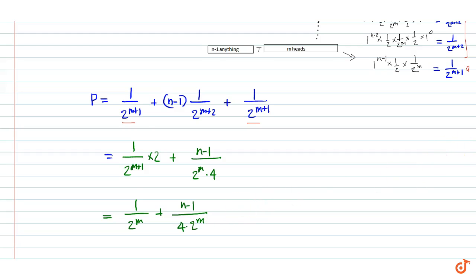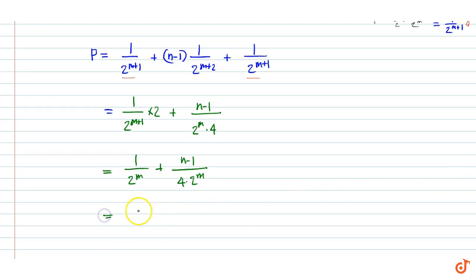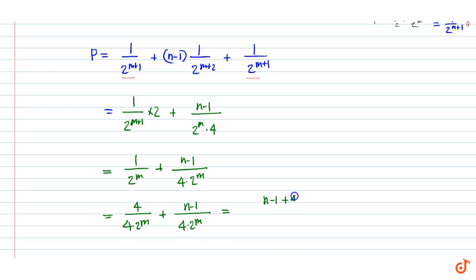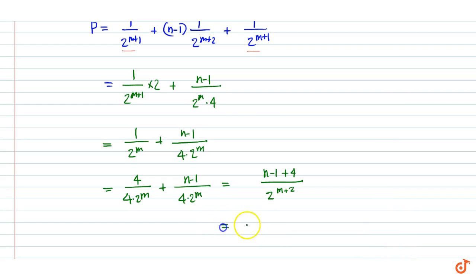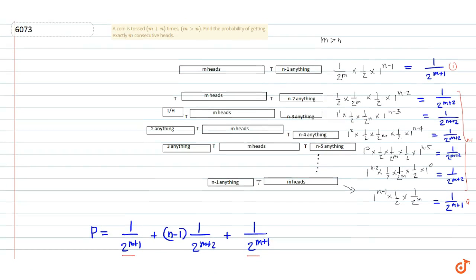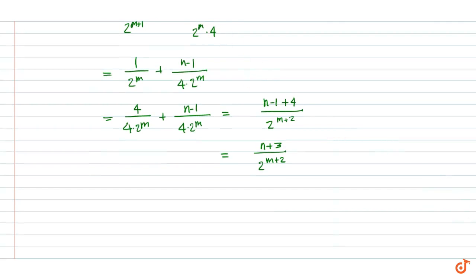Simplifying further: this equals n minus 1 plus 4 divided by 2 to the power m plus 2, which equals n plus 3 divided by 2 to the power m plus 2. This is the final expression for the probability, and this is our final answer.